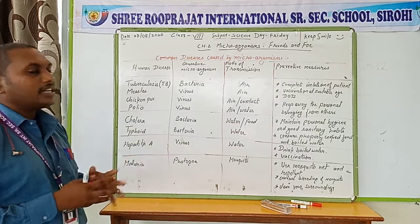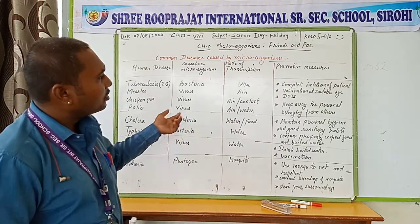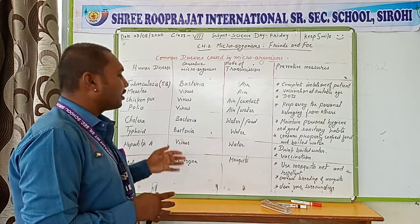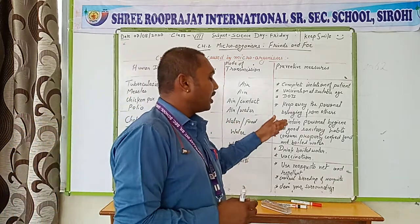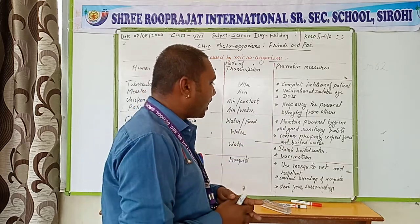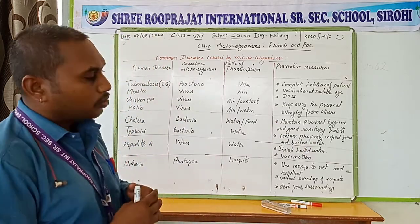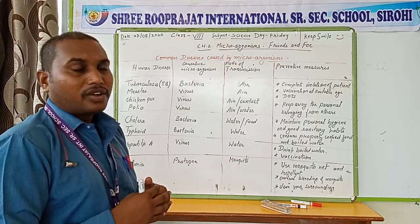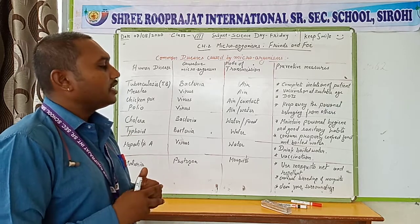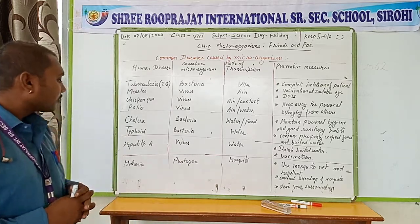Typhoid is a disease caused by bacteria that can be transmitted through contaminated water. The contaminated water may contain this bacteria and can cause typhoid disease. We should maintain personal hygiene and good sanitary habits. We should consume properly cooked food and boiled water — when food is cooked properly, the bacteria die due to high temperature, and when water is boiled and filtered, the bacteria present in the water will die.